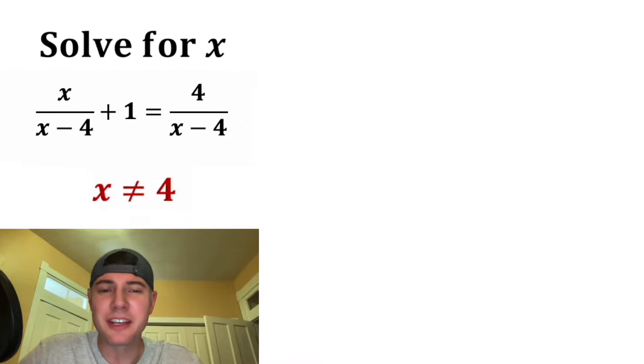So for the first step, we want to say x cannot equal 4. And the reason for that is if x were equal to 4, these would be 0 in the denominator, and division by 0 is undefined.